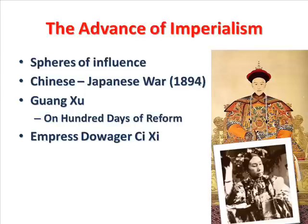In 1894, China went to war with Japan over Japanese involvement in Korea. The Chinese were defeated. Japan demanded and received the island of Taiwan and the Liaodong Peninsula, but European powers forced Japan to give the Liaodong Peninsula back to China. In 1897, two German missionaries in China were murdered. Germany used this pretext to demand territories in the Shandong Peninsula. China gave these territories to Germany, and as a result, other European nations began to make new claims on Chinese territory.